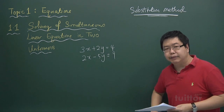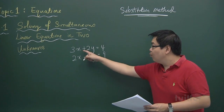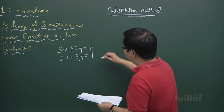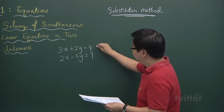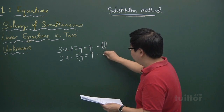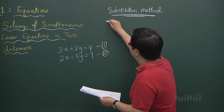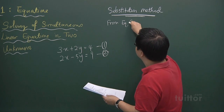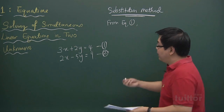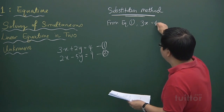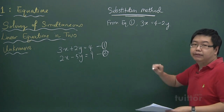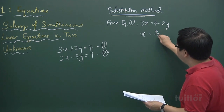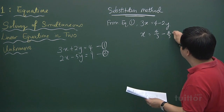Basically, in the substitution method, we are actually trying to make one of the unknowns the subject. So for example, if we decide to make x a subject from equation 1, from equation 1 we will have 3x equals 4 minus 2y. And if you divide by 3 throughout, you get x equals 4 over 3 minus 2 over 3 times y.